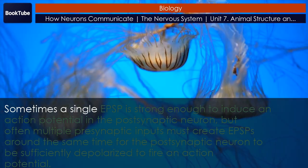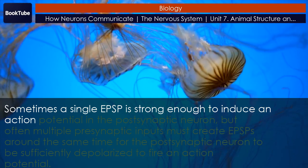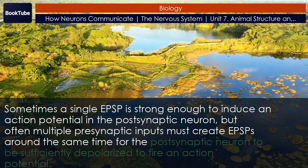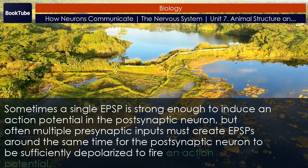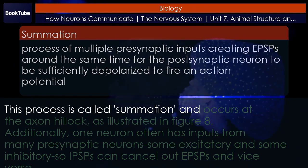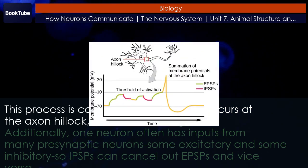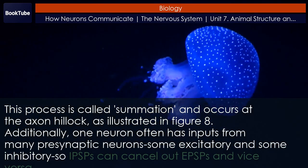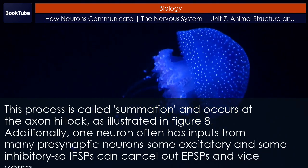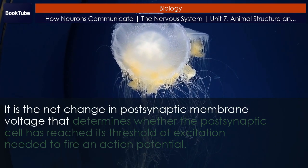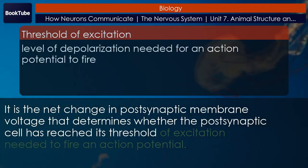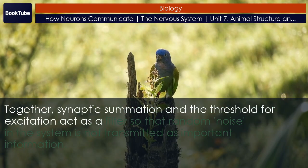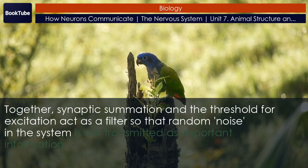Signal summation. Sometimes a single EPSP is strong enough to induce an action potential in the postsynaptic neuron, but often multiple presynaptic inputs must create EPSPs around the same time for the postsynaptic neuron to be sufficiently depolarized to fire an action potential. This process is called summation and occurs at the axon hillock, as illustrated in Figure 8. Additionally, one neuron often has inputs from many presynaptic neurons — some excitatory and some inhibitory — so IPSPs can cancel out EPSPs and vice versa. It is the net change in postsynaptic membrane voltage that determines whether the postsynaptic cell has reached its threshold of excitation needed to fire an action potential. Together, synaptic summation and the threshold for excitation act as a filter so that random noise in the system is not transmitted as important information.